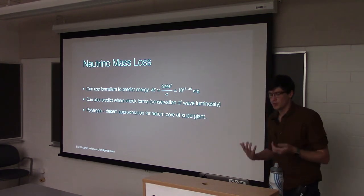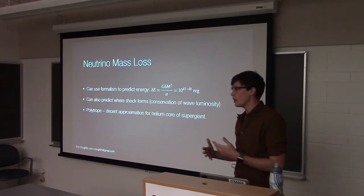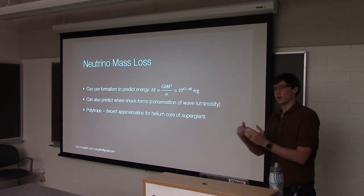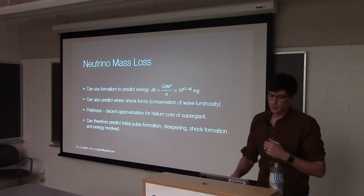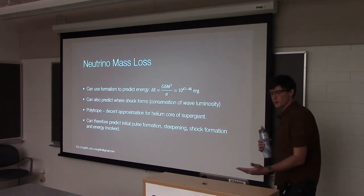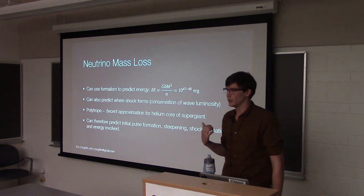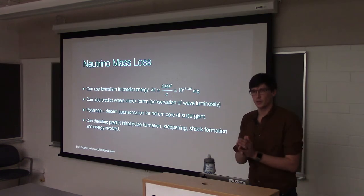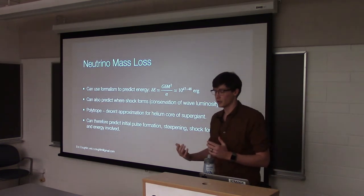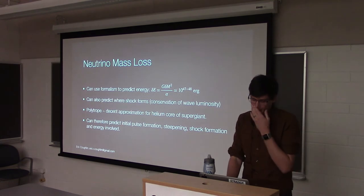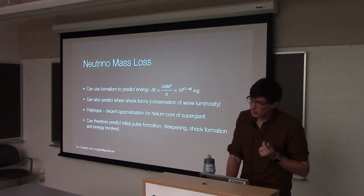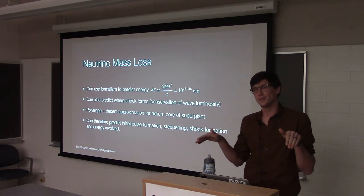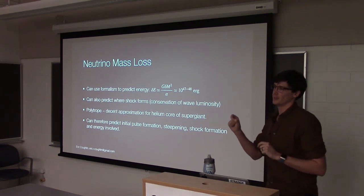The specific progenitor I used was a polytrope, which is a reasonable approximation for the helium core of a supergiant, outside of which there's an extended hydrogen envelope. Using this perturbation theory approach, we get a good handle on the initial sound pulse formation, the velocity pulse, its steepening into a shock, and the overall energetics of the explosion. There is also an inner boundary condition from the infall, which complicates the math, but the result is mostly set by the background density profile.